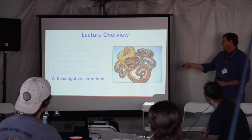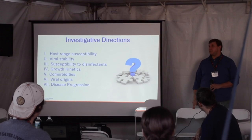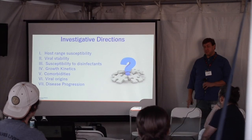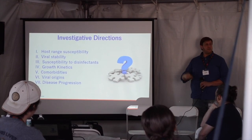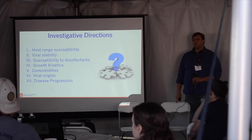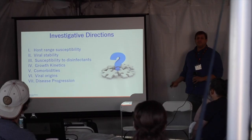Investigative directions — there's a lot we don't know. Host range susceptibility: I just finished writing a small grant today to fund a vet student to work on this over the summer. I have a large panel of reptile cell lines — snake, turtle, crocodilian, and lizard cell lines. Can we take the virus and infect cells in the lab? If we can, that may be some of the first evidence to suggest other species besides snakes are susceptible. How stable are these viruses? If you have a virus-positive snake with mucus all over the inside of its enclosure, how long is that mucus going to still be infective to another snake? What disinfectants can you use? Steve's going to talk about that.